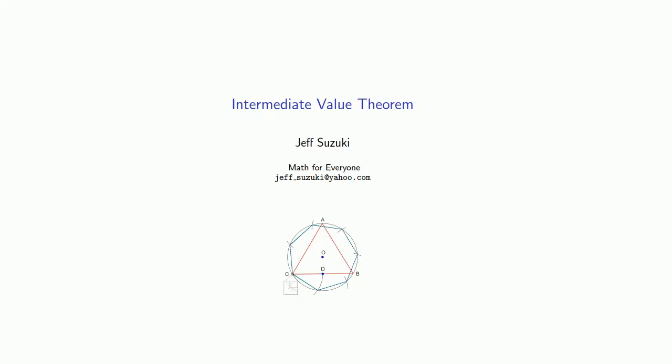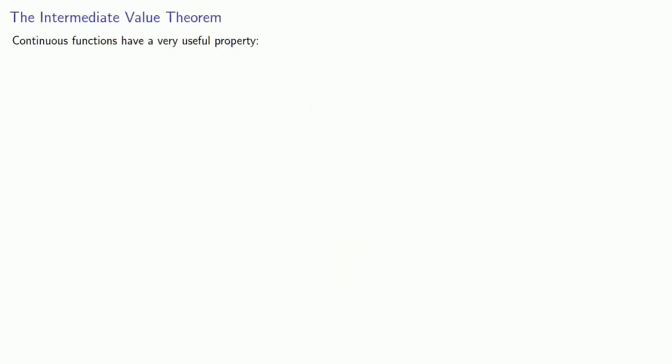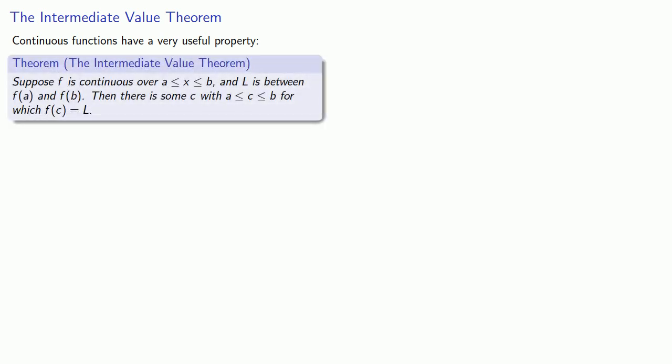One of the reasons that mathematicians are not satisfied with the 'I-know-it-when-I-see-it' definition of continuity has to do with a useful property of continuous functions. This property is known as the Intermediate Value Theorem. Continuous functions have the following property: suppose a function is continuous over some interval between a and b, and let L be some value between f(a) and f(b). Then there is some c in this interval for which f(c) is equal to L.